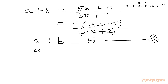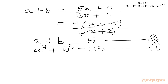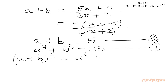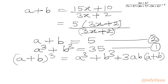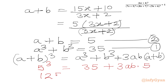Let me write equation 1 also: a cubed plus b cubed equals 35. Now I will use the algebraic formula: (a plus b) whole cube equals a cubed plus b cubed plus 3ab times (a plus b). So I can write LHS as 5 cubed. In RHS, a cubed plus b cubed is 35, plus 3 times ab, and a plus b is 5. So the equation becomes: 125 equals 35 plus 15ab.